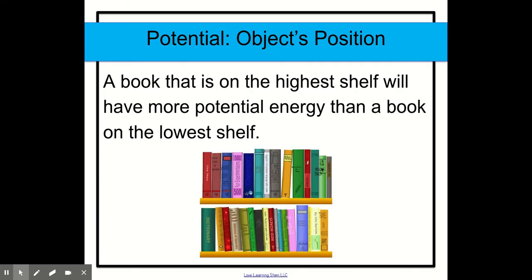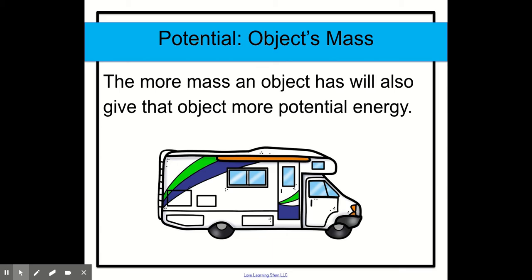So what about a book on a shelf? The book that is on the highest shelf will have the most potential energy because it's on the higher location. So that book on the higher shelf will be able to fall down at a much further distance. The more mass an object has will also give that object more potential energy. We saw that in kinetic and that's what it has in common with potential energy.